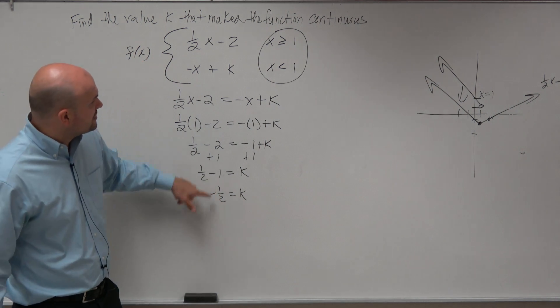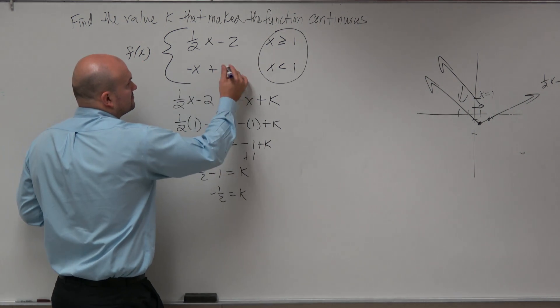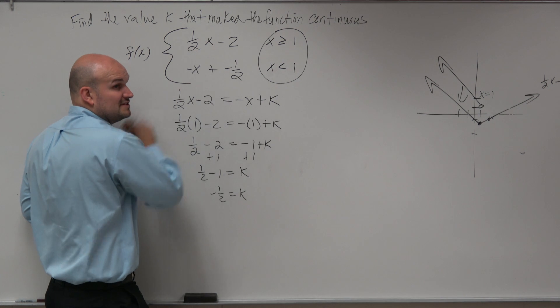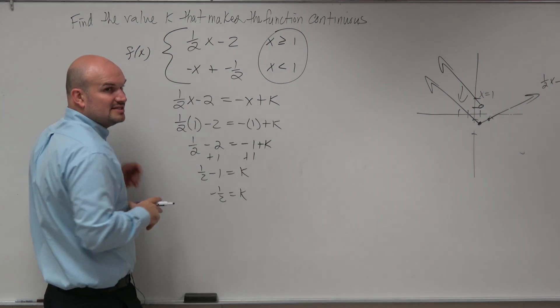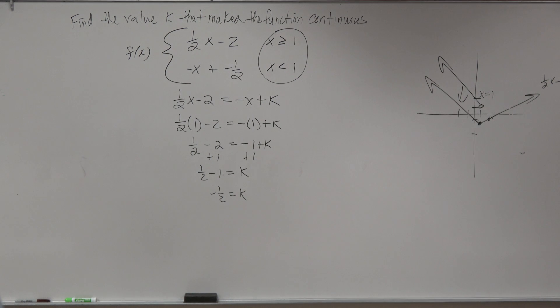But it ends up being, if you had this y-intercept at negative 1 half, if you guys were to graph these two now, they would be continuous function. And that's what the k is doing. Okay? So before we go to lunch...